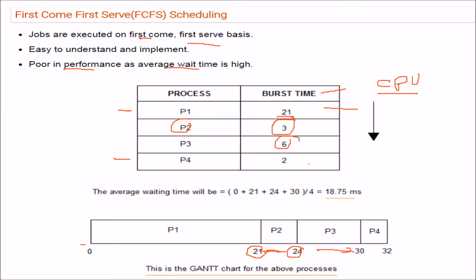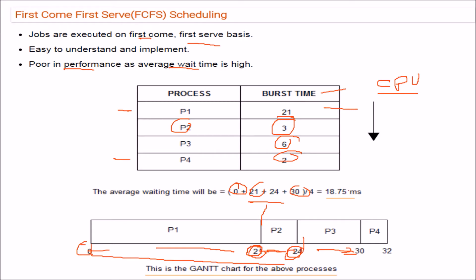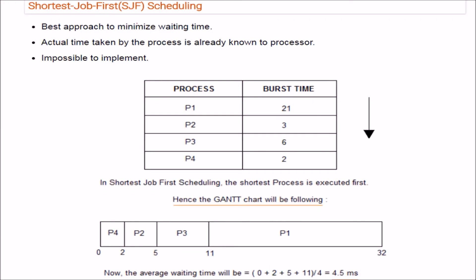Then P3 is served, and finally P4. The waiting times are: P1 waits 0, P2 waits 21 cycles, P3 waits 24 cycles, and P4 waits 30 cycles. Adding all these and dividing by 4 gives an average waiting time of 18.75 milliseconds.